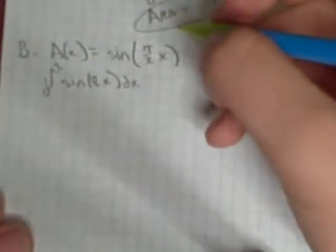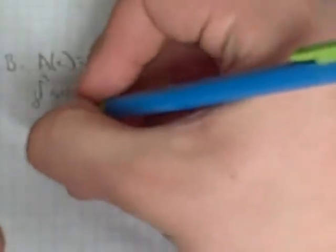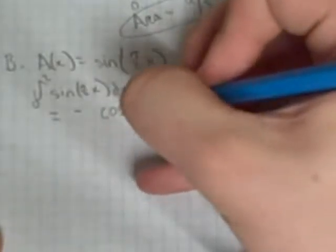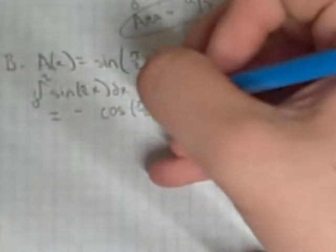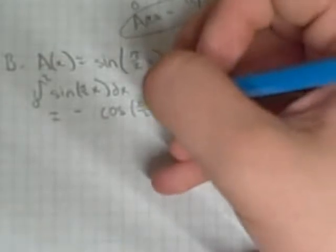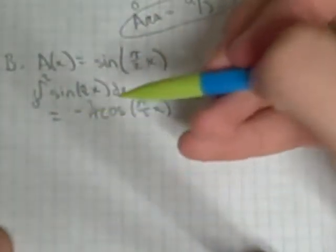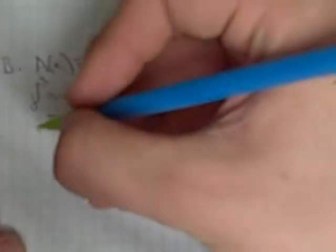We evaluate for the antiderivative. The antiderivative of sin is negative cosine, so the inside stays the same: negative cosine of (πx/2). Then we apply the chain rule — we need to find what times π/2 gives us 1, and that is 2/π. So we have the antiderivative as negative (2/π) cosine(πx/2), evaluated from 0 to 2, which is this plugged in with 2 minus this plugged in with 0.